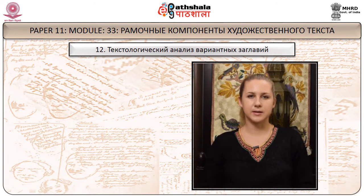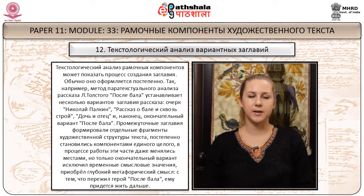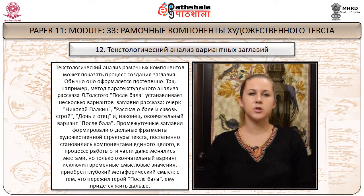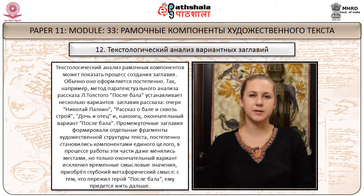Текстологический анализ вариантных заглавий. Текстологический анализ рамочных компонентов может показать процесс создания заглавия. Обычно оно оформляется постепенно. Так, метод паратекстуального анализа рассказа Толстого «После бала» устанавливает несколько вариантов заглавия: «Николай Палкин», «Рассказ о Бале и сквозь строй», «Дочь и отец» и, наконец, окончательный вариант «После бала». Промежуточные заглавия формировали отдельные фрагменты художественной структуры текста, постепенно становились компонентами единого целого. Только окончательный вариант приобрёл глубокий метафорический смысл: с тем, что пережил герой после бала, ему придётся жить дальше.